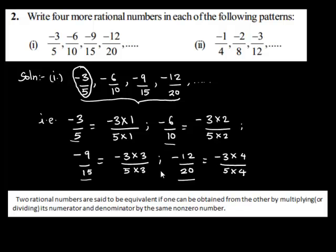Two rational numbers are said to be equivalent if one can be obtained from the other by multiplying or dividing its numerator and denominator by the same non-zero number.